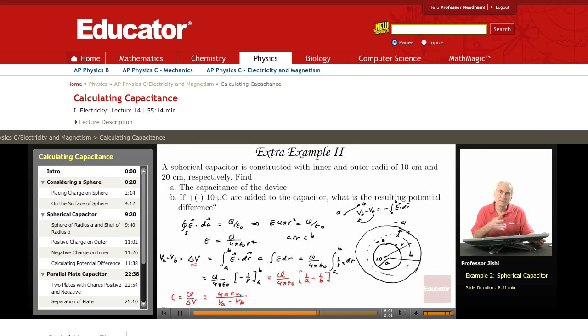And now for this problem, all you have to do is put in the numbers. 4 pi epsilon 0, now 1 over 4 pi epsilon 0 is 9 times 10 to the 9, so this is 1 over 9 times 10 to the 9. So 1 over A, A is 0.1 meters, so 1 over A is 10. And B is 0.2, so 1 over B is 5.